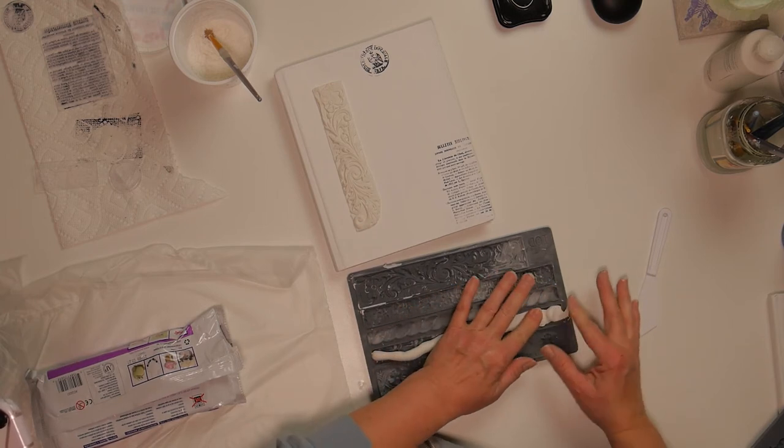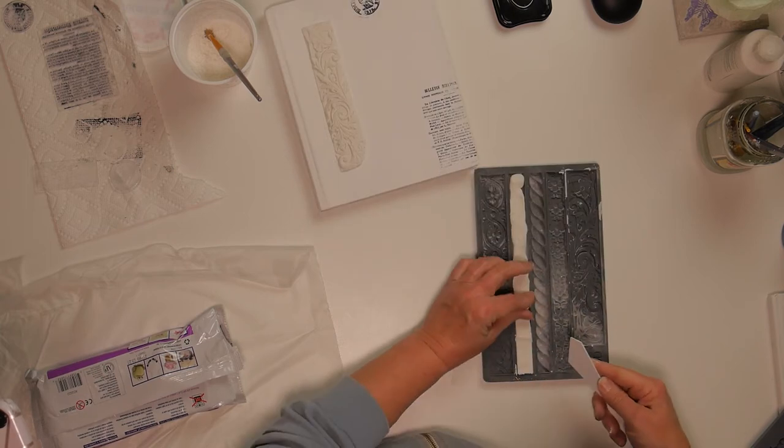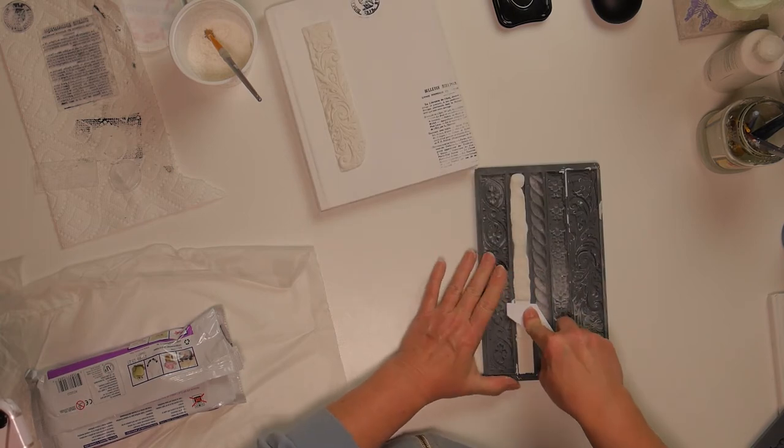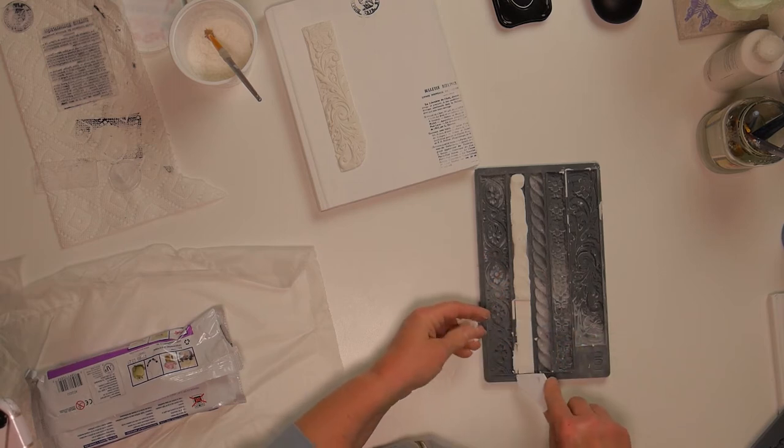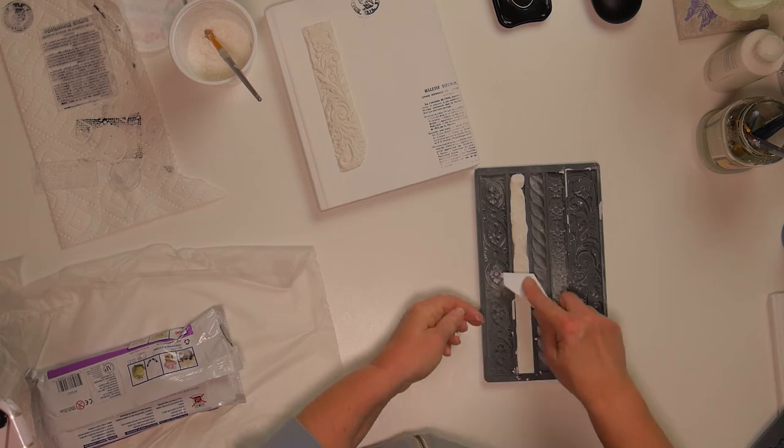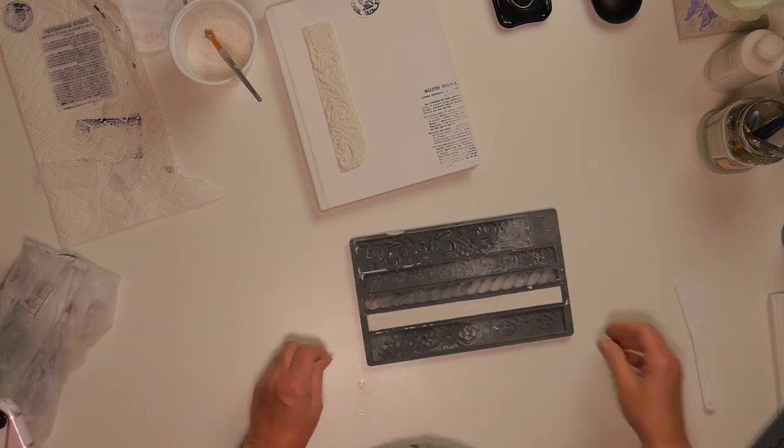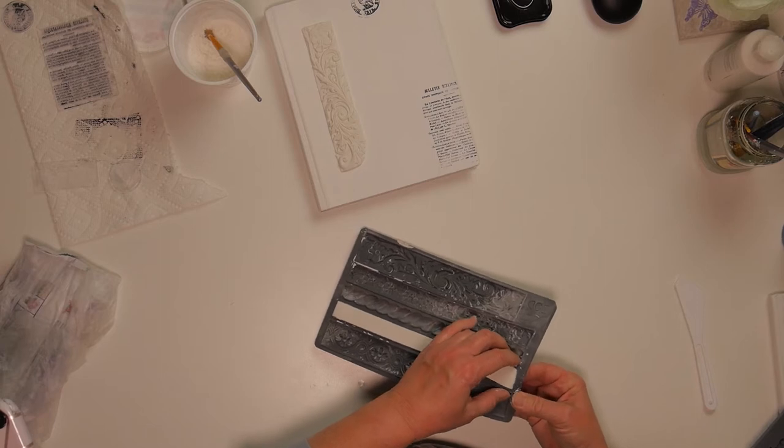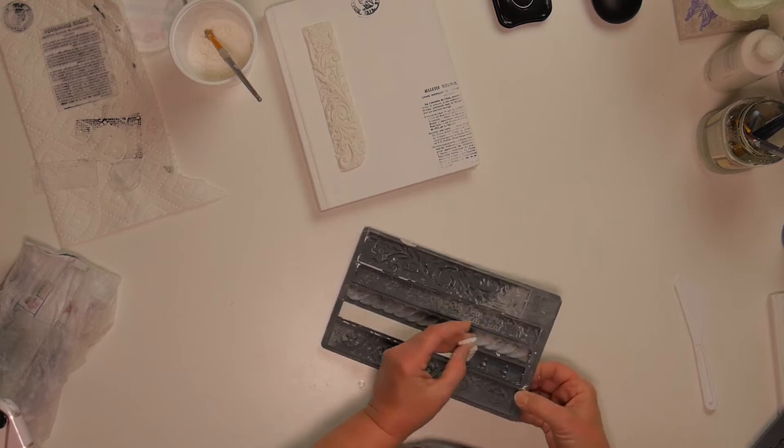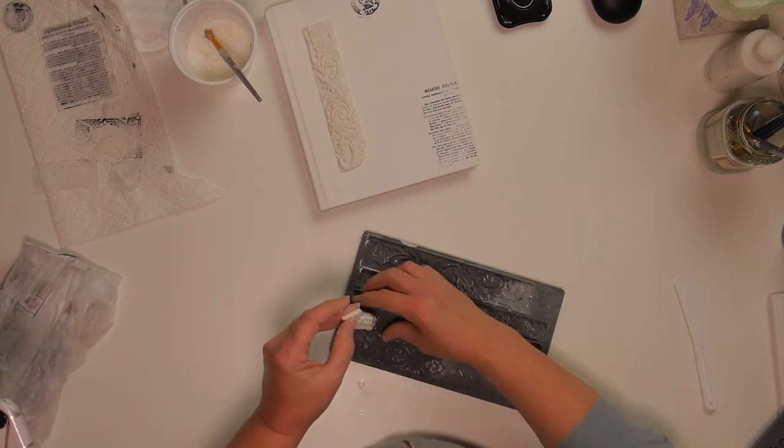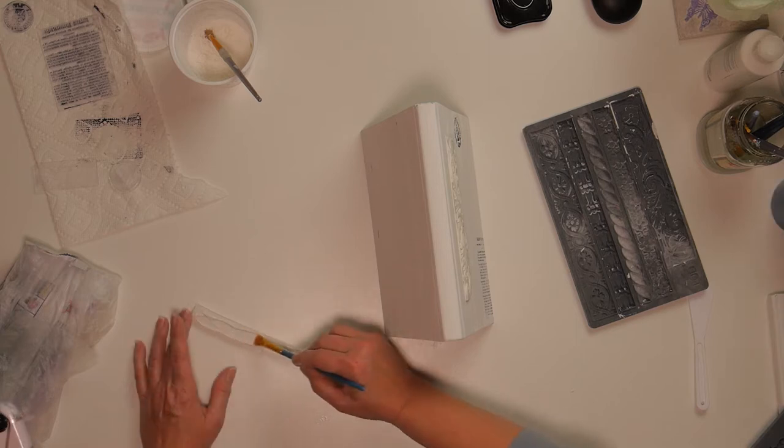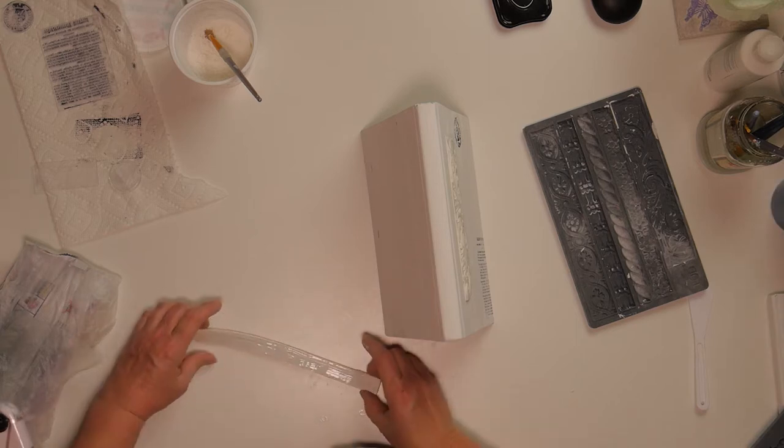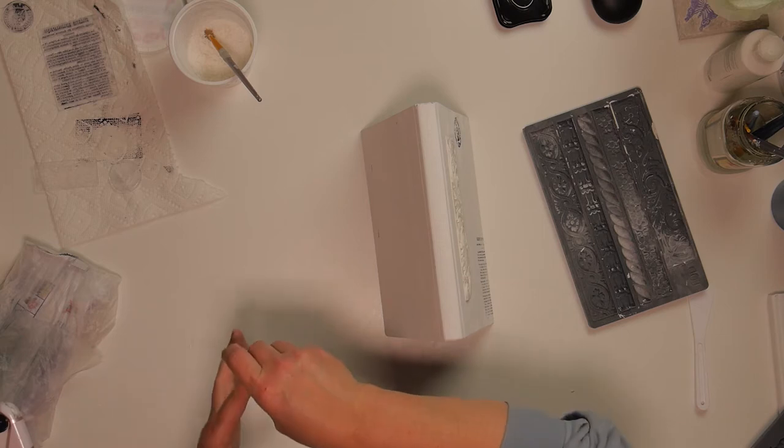So here again I'm using the IOD Trimmings 2 mold. This is going to be for the binding. I'm going to use the whole strip on this one. Put some Titebond glue on it and glue it to the binding.